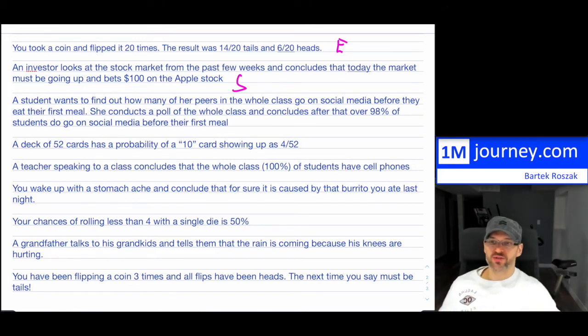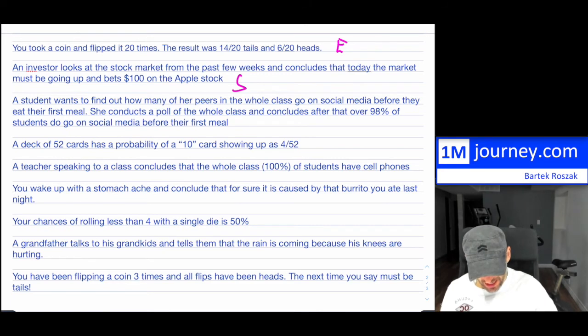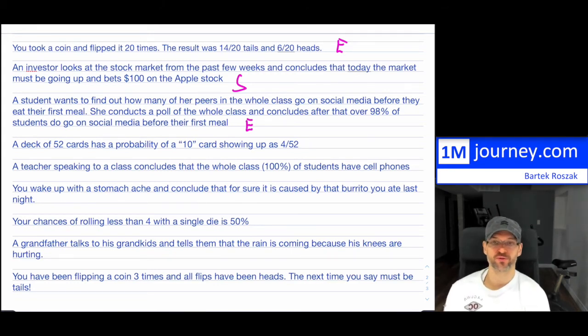The next one is a student wants to find out how many of her peers in the whole class go on social media before they eat their first meal. So she conducts a poll of the whole class, finds out all the information from the class and then looks at the results and concludes after that that 98% of the students go on social media before their first meal, which probably might be actually true. So what is this? Is this theory, or is it based on empirical results or is it very subjective? So this turns out that it's empirical. This particular student actually conducted and has the actual results in front of them, and it shows that 98% of the students go on social media before their first meal.